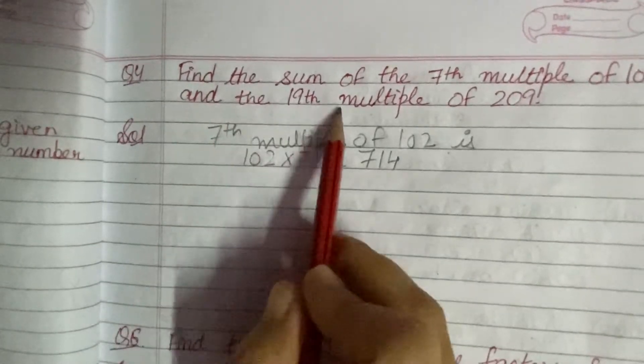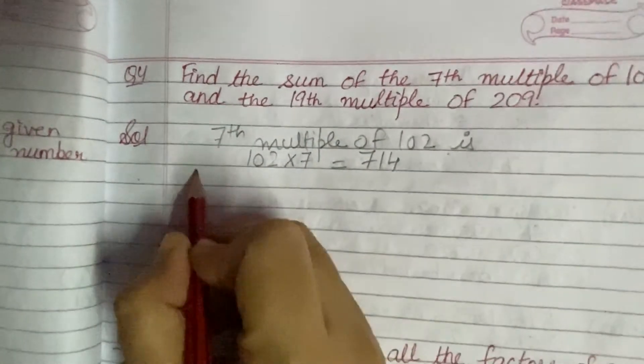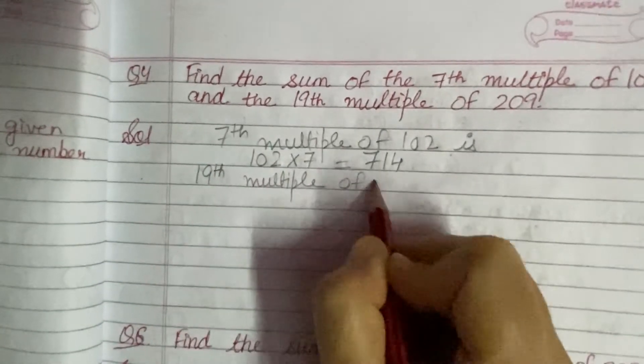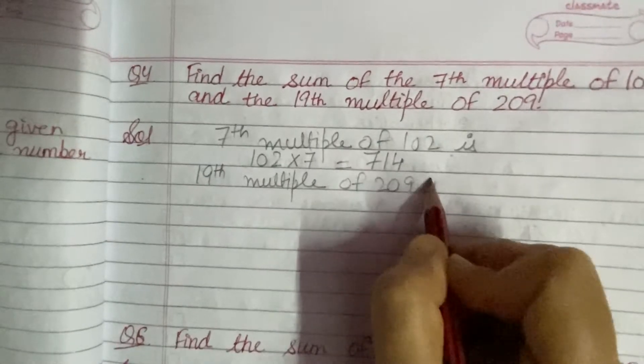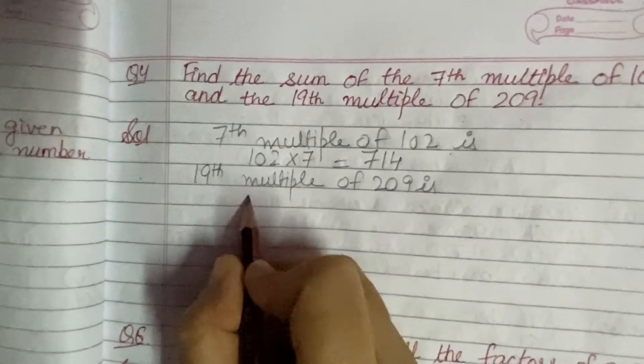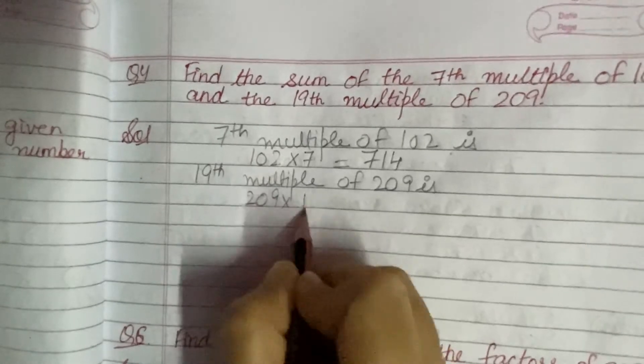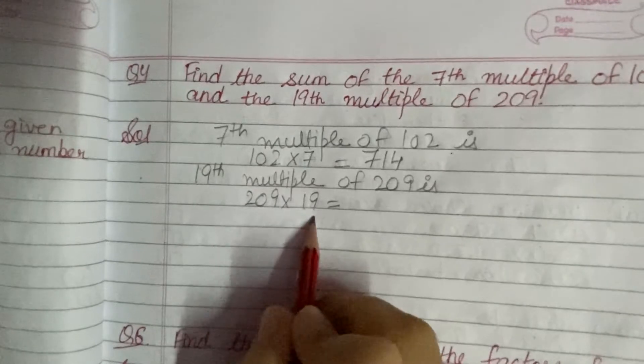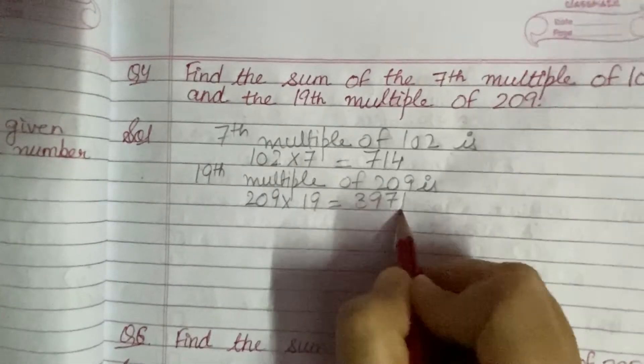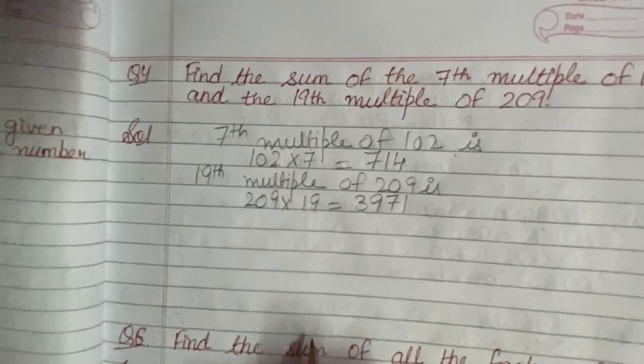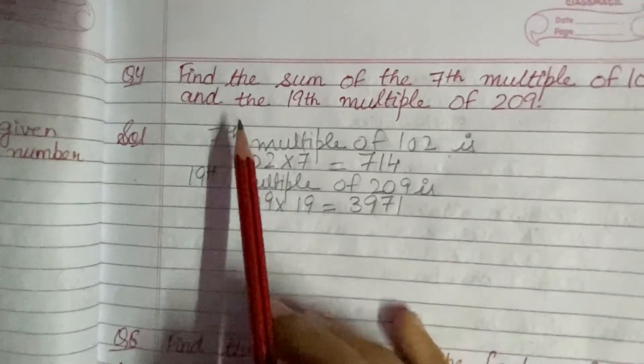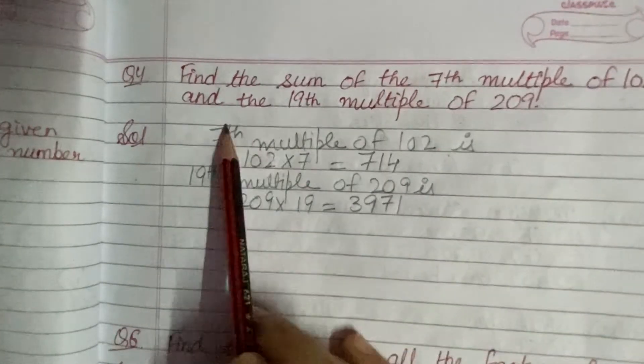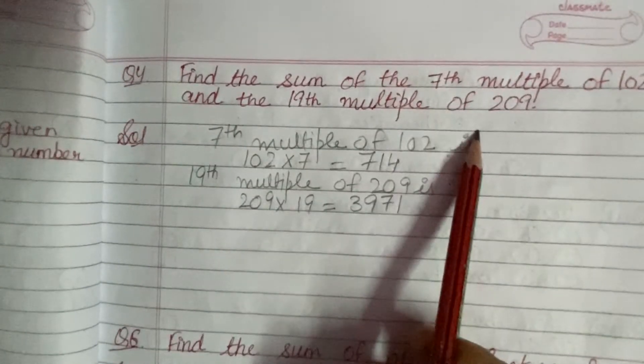And the 19th multiple of 209 is given by multiplying 209 by 19. On multiplying 209 and 19, you will have 3971 as your answer. Now what is written in the question? Find the sum of the 7th multiple of 102 and the 19th multiple of 209.